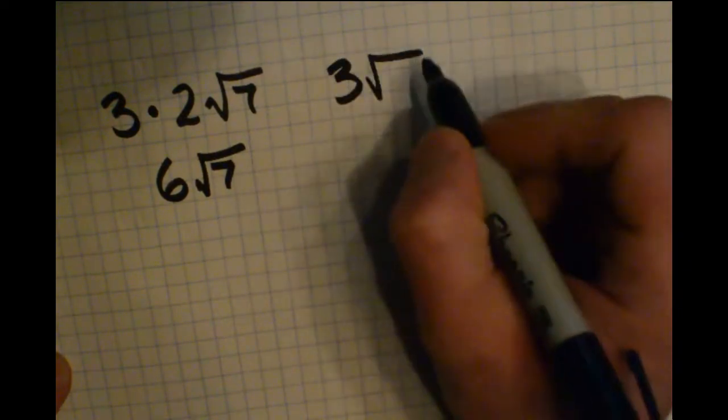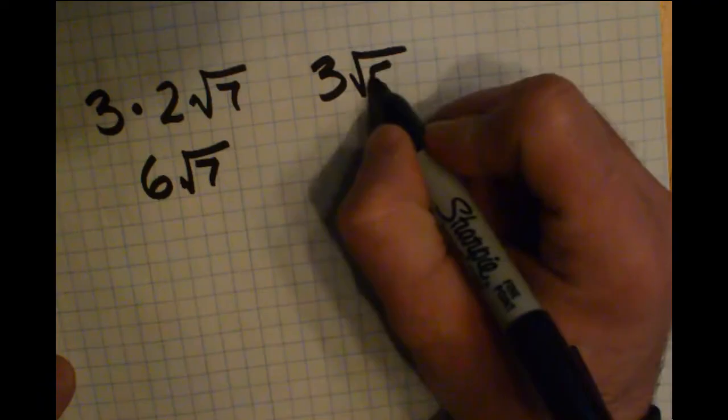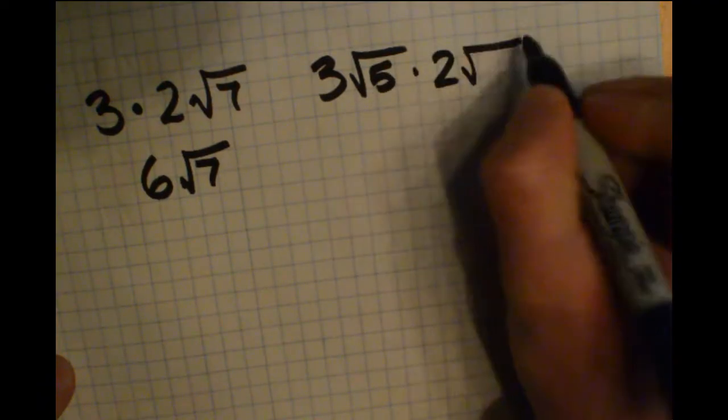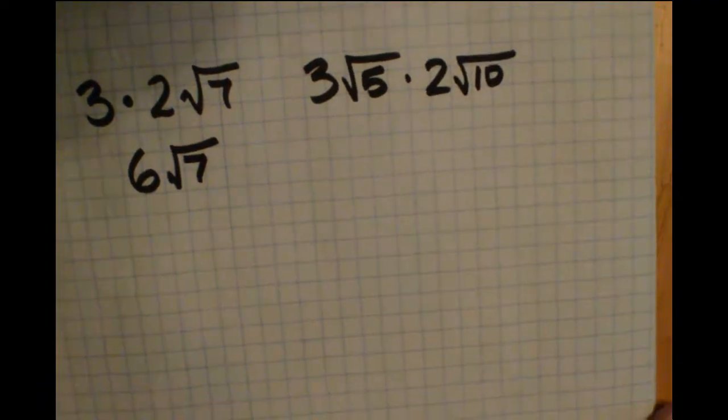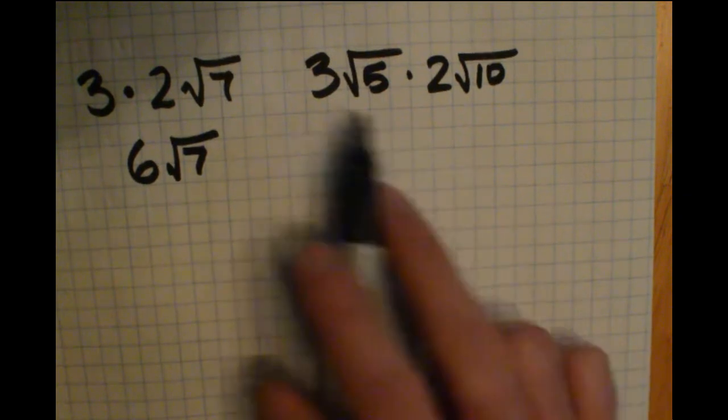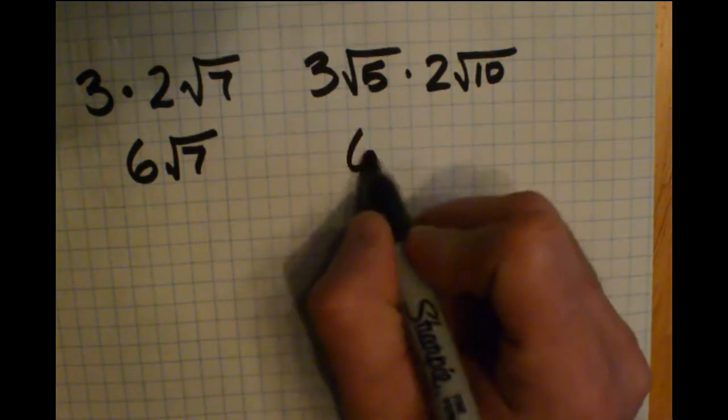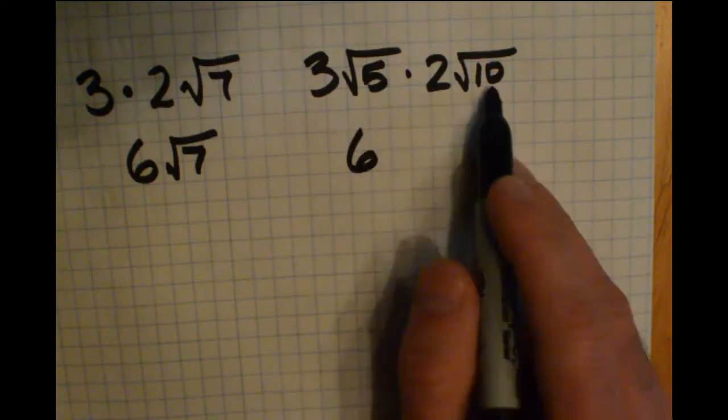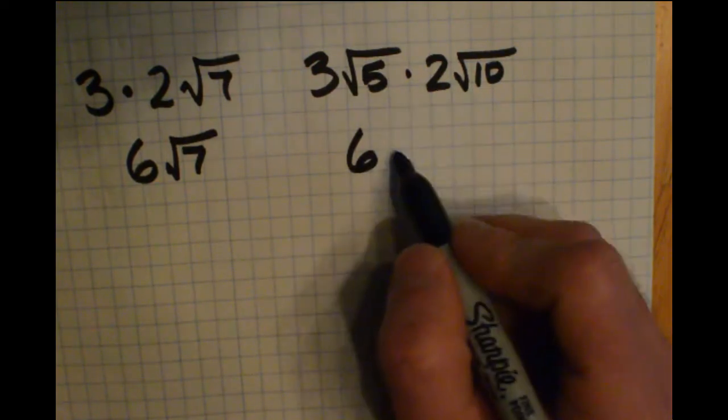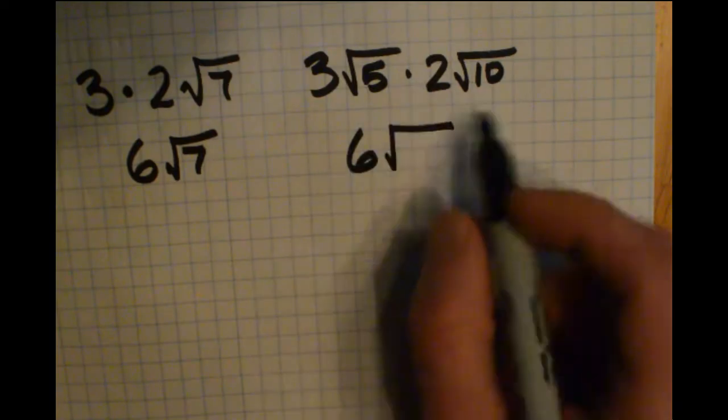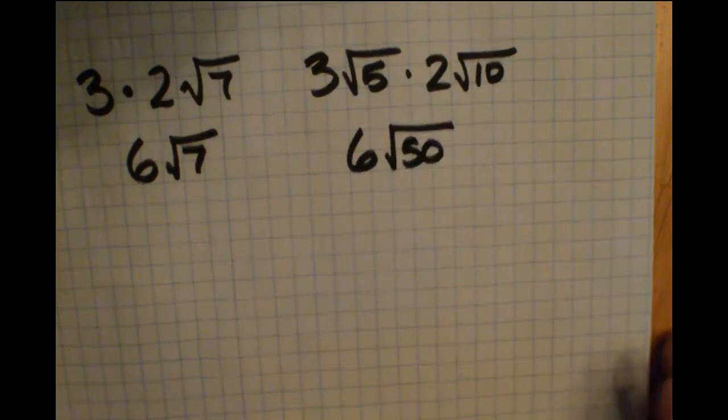Now what if we had 3 radical 5 times 2 radical 10? If we're multiplying these together, the two coefficients are both outside the radical, so we multiply those to get 6. These two radicands are both inside a radical, so 5 times 10 is 50. We can multiply those together.